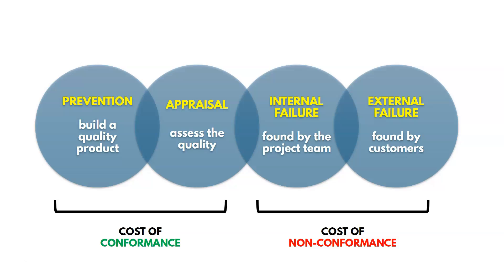Then there's internal failures — if we produce something and the project team finds a defect, that's an internal failure, assuming it doesn't make it to the customer. We'd like to fix an issue before it reaches the customer. An external failure is the worst case scenario — when something is sent to customers and the defect is found by them. There are lots of costs associated with addressing that, including returns, warranties, and so on.